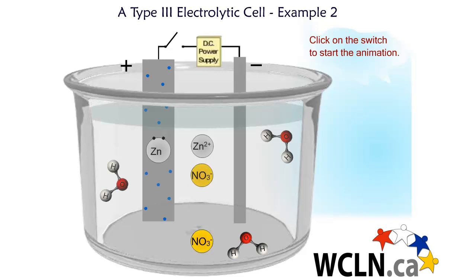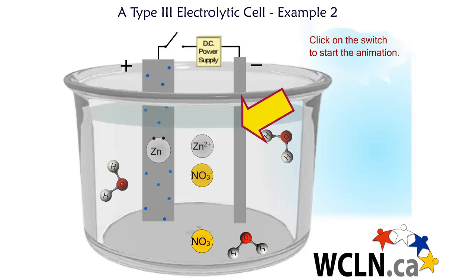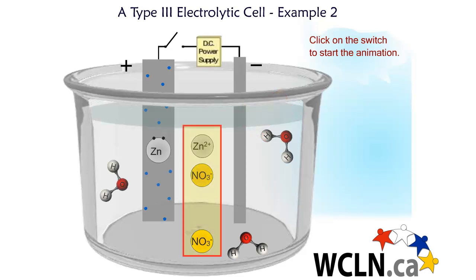In the second example of a type 3 electrolytic cell, we have an impure plate of zinc as the anode. The impurities are the blue dots, and we have a pure rod of zinc as the cathode on the right side — the negatively charged electrode. Both electrodes are dipped into a solution containing zinc ions.